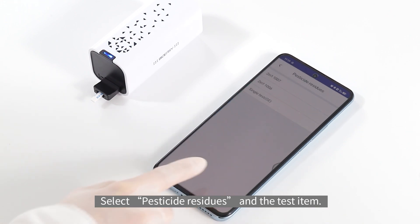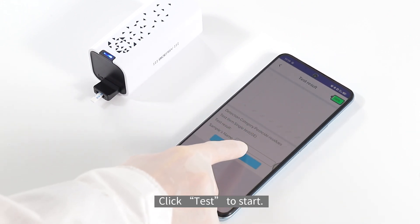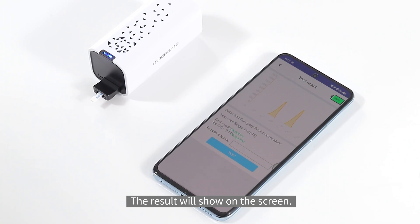Select pesticide residues and the test item. Click test to start. The result will show on the screen.